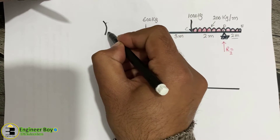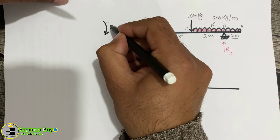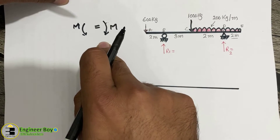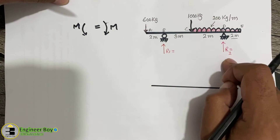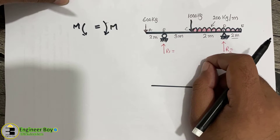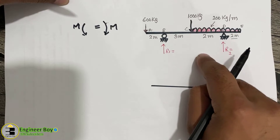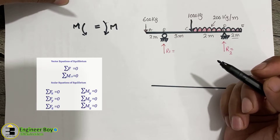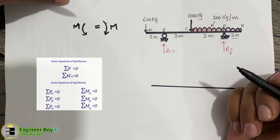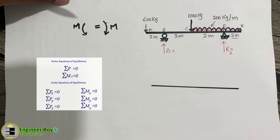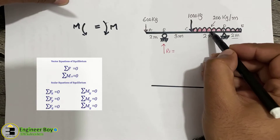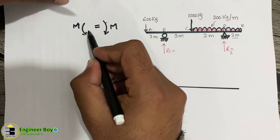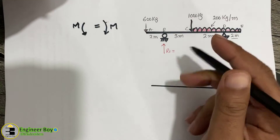We'll use equilibrium equations — specifically, clockwise moment equals anti-clockwise moment — to determine R1 and R2. This is a determinate structure, so equilibrium equations are sufficient. These state that the sum of vertical forces must be zero, the sum of horizontal forces must be zero, and the sum of moments at any point along the span must be zero.